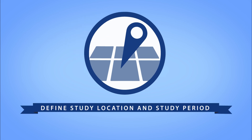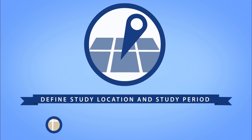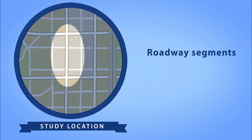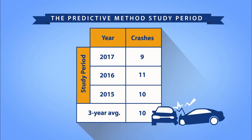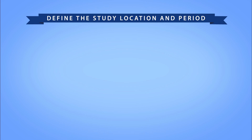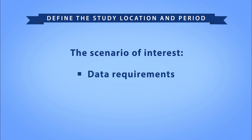The first step of the predictive method is to define your study location and study period. The study location is broken down to roadway segments and/or intersections — these are the most basic unit of analysis for the predictive method. You combine the safety performance results of the segments and/or intersections to estimate the safety performance of the project. The study period is defined in terms of years and may include a single year or multiple years. As you define the study location and period, you also need to determine the scenario of interest for which you want to estimate the long-term average safety performance.